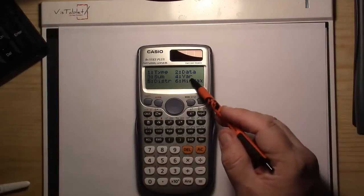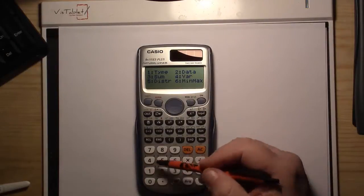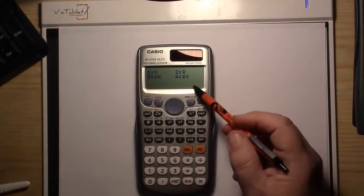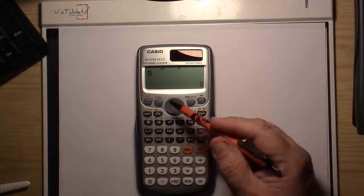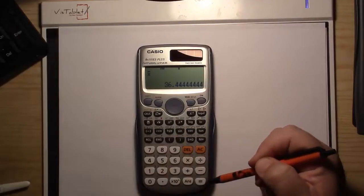Choose number 4, which says bar. Then X bar is number 2, so press 2. This puts X bar on the screen, and simply press equals.